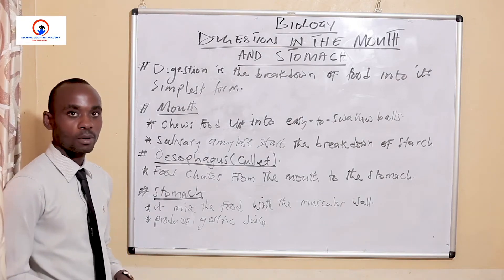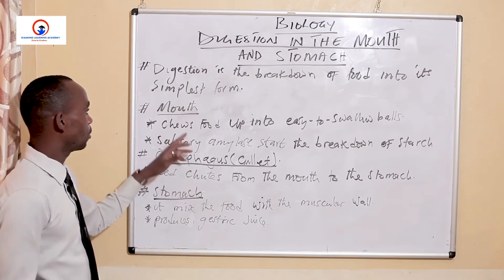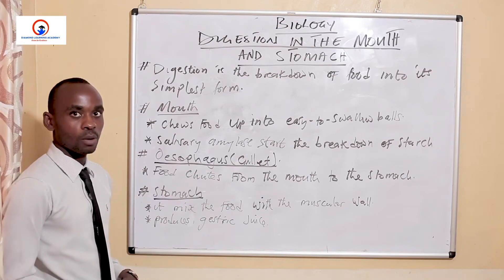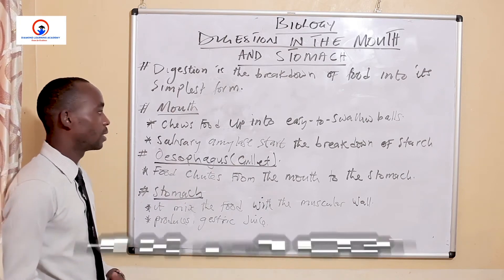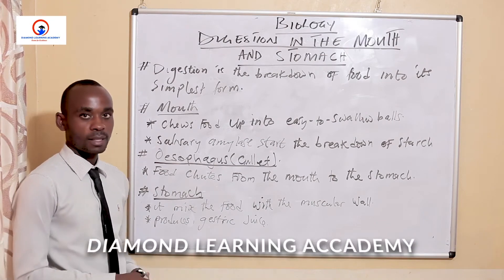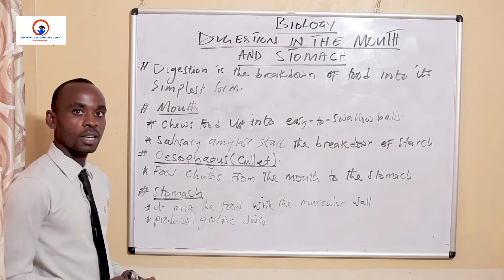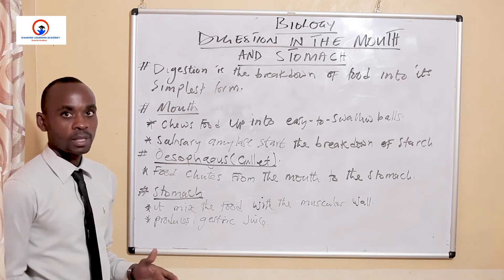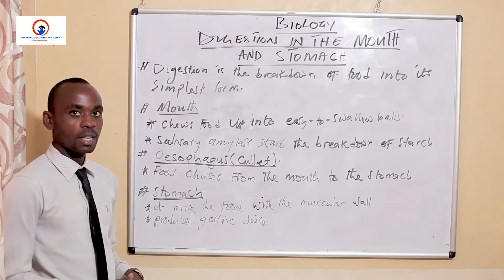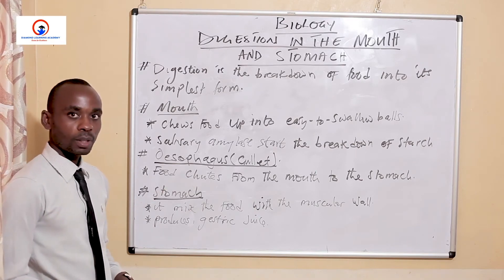We also need to understand that chemical digestion normally takes place because there are chemicals involved. In the mouth, there are what we call salivary glands, which produce an enzyme called salivary amylase. The salivary amylase in the mouth is the one that starts the digestion of starch, so basically the digestion of starch usually starts in the mouth.